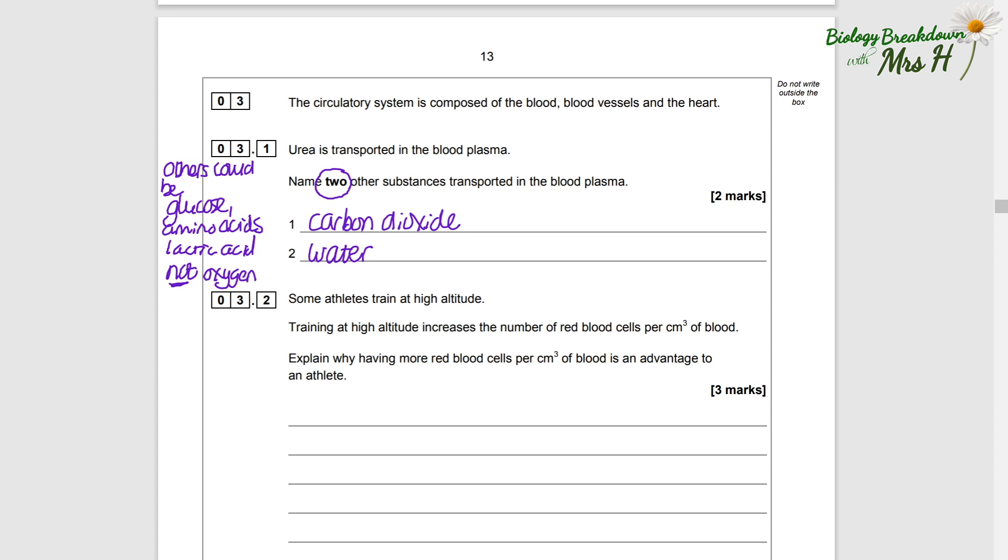3.2: Some athletes train at high altitude. Training at high altitude increases the number of red blood cells per centimeter cubed of blood. Explain why having more red blood cells per centimeter cubed of blood is an advantage to an athlete.